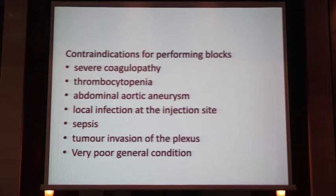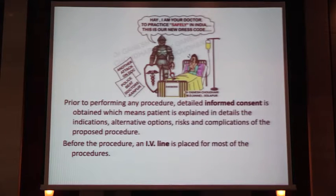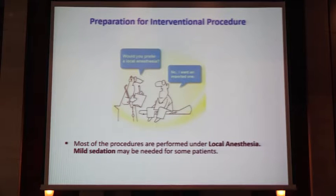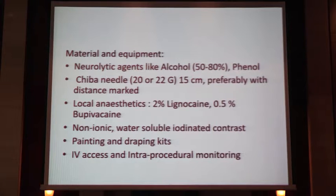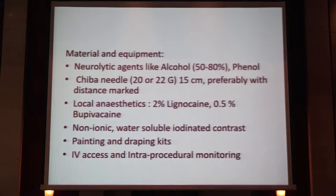Common contraindications apply to all the blocks. Informed consent is absolutely necessary, especially in Maharashtra settings. Mostly all these procedures are done under local anesthesia, with very mild sedation if required for the patient to lie still. Materials and equipment required include neurolytic agents, Chiba needles either 20 or 22 gauge with markings, non-ionic water-soluble iodinated contrast, sterile draping kits which are very important for aseptic precautions, IV access, and intra-procedural monitoring.